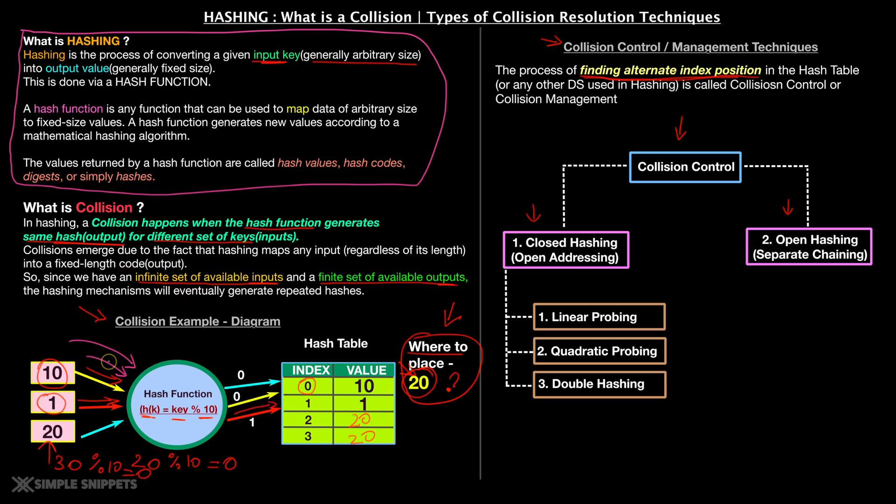And this is the example. We saw a very basic example of collision, and how to resolve collision is basically called collision control, which has two general methodologies. One is closed hashing, second is open hashing. Closed hashing has three variants, three basic variants: linear probing, quadratic probing, and double hashing. And we will study these in detail in further videos. I just wanted to give you a good introduction to what is collision, why collision happens in hashing, and the types of collision resolution.